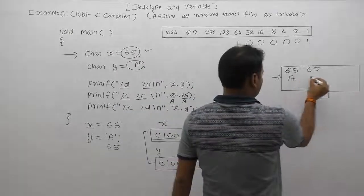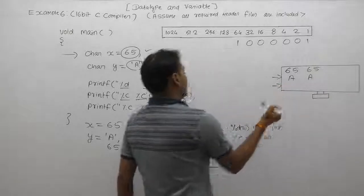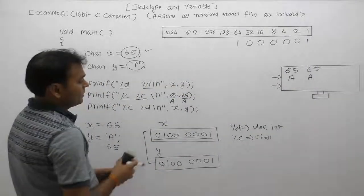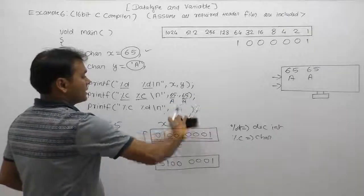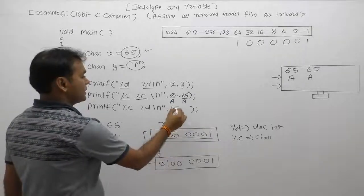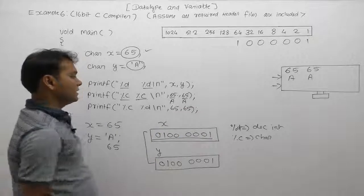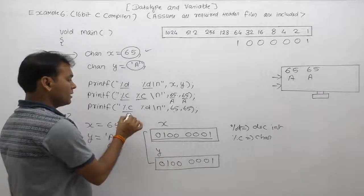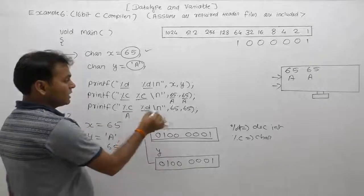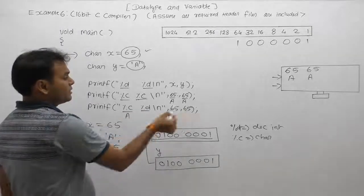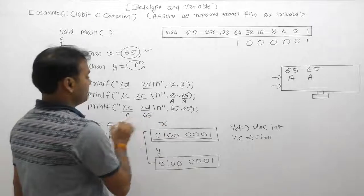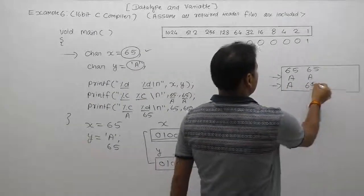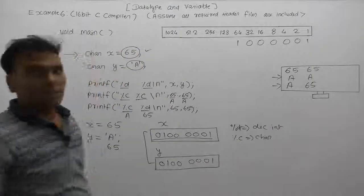Using percent c, the character value is displayed. The equivalent decimal is 65 and 65, and the character value is 'A' and 'A'. Next, when we pass x and y directly — passing 65 — the output is still A and 65. This is the output with respect to characters.